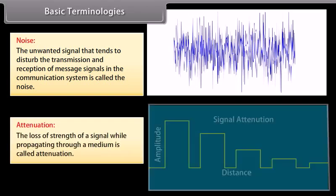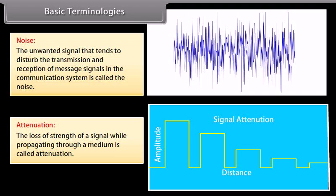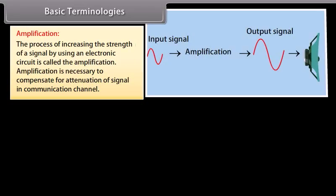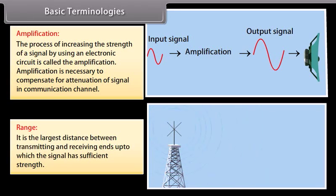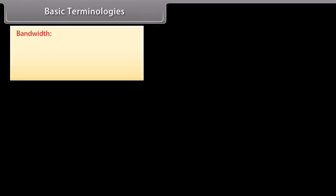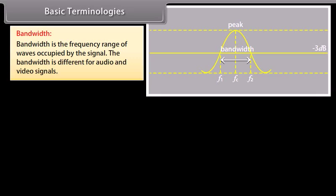Attenuation is the loss of strength of a signal while propagating through a medium. Amplification is the process of increasing the strength of a signal using an electronic circuit. Amplification is necessary to compensate for attenuation of the signal in the communication channel. Range is the largest distance between transmitting and receiving ends up to which the signal has sufficient strength. Bandwidth is the frequency range of waves occupied by the signal. The bandwidth is different for audio and video signals.